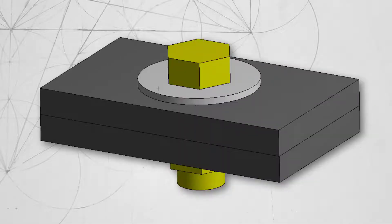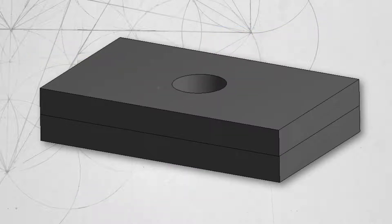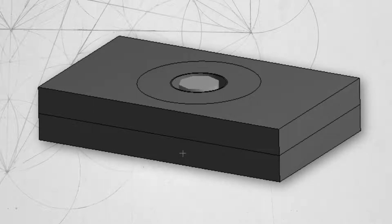If we decide to use beam elements for modeling bolts, then there are few pre-processing steps that we need to follow. In general, the CAD geometry of the assembly includes bolt head, nuts and washers that need not be used when we represent bolts as line bodies, so we can delete them from the geometry. But before we do that, it's strongly recommended to imprint the faces of the bolt head or nut or the washer on the mating parts, because we need to connect the vertex of the line body representing the bolt to the mating parts. It's more accurate to do so on a surface instead of an edge, so the forces are distributed over a finite area as opposed to distributing it over an edge.